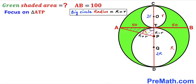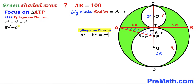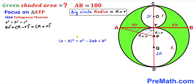Focusing on right triangle ATP, we apply the Pythagorean theorem: a² + b² = c². Our hypotenuse is (R + r), and the two legs are 50 and (R − r). So we get: 50² + (R − r)² = (R + r)². Expanding the left side using (a − b)² = a² − 2ab + b², we get: 2500 + R² − 2Rr + r².